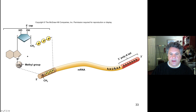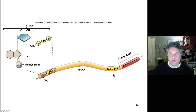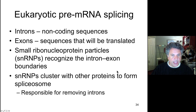The poly-A tail is added downstream from a recognition site for poly-A polymerase. This recognition site found in eukaryotic mRNAs is a consensus sequence — not all genes have the exact sequence, but it is overall conserved. Poly-A polymerase recognizes this and begins synthesis of a poly-A tail about 30 nucleotides downstream from this poly-A hexamer recognition site.